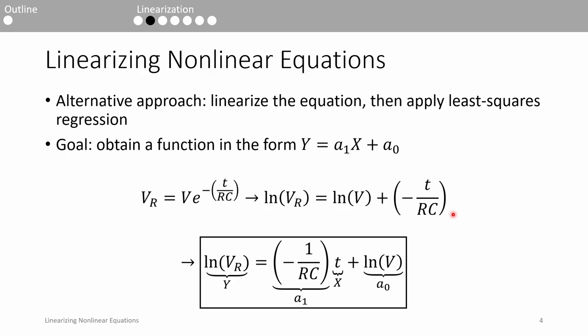Therefore, we've successfully cast this nonlinear equation into its linear form. The ln of VR term represents Y, the slope is negative 1 over RC, and the Y-intercept is the ln of V term.